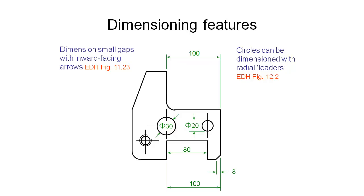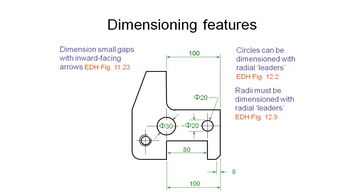We can also dimension circles with radial leaders — a single arrow pointing to the circle of interest with the dimension standing off some distance away. When dimensioning radii, they need to be dimensioned with radii leaders. Here's an example of a radius on the inside of a corner — a radius of 15, where R is the shorthand for radii. There are different ways to show this, including the dimension over the top of the object. When using leaders, try to come off at an angle and then square them up with a flat section before placing the dimension to one side.